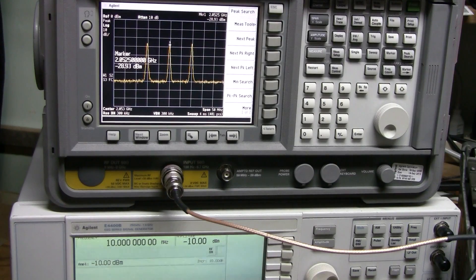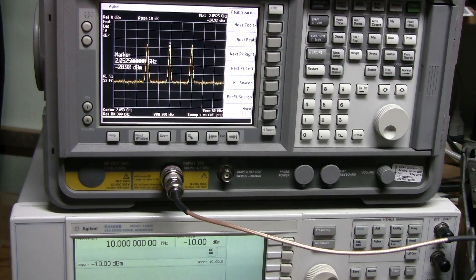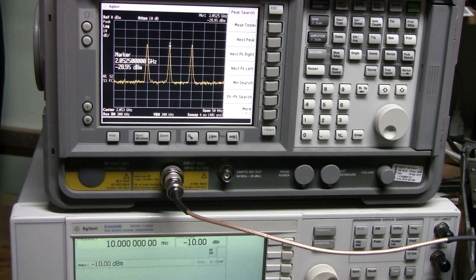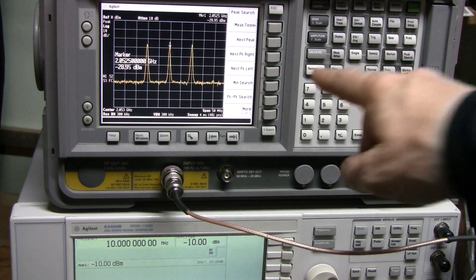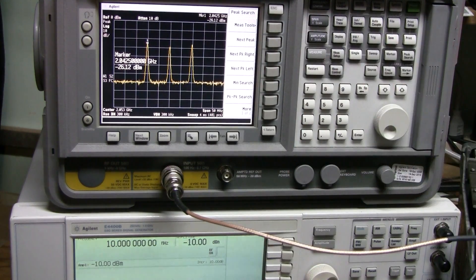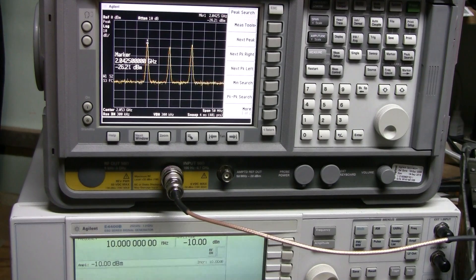And here is the same test but with the 2812 diodes. And as expected the result is somewhere in between. The LO feed-through is about minus 29 dBm and the signal is about minus 26 dBm.